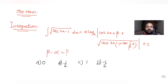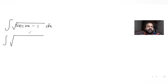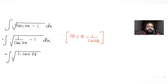Let's first understand how to solve this expression. If I try to solve this integral of root of (sec 2x minus 1) dx, I can write sec theta as 1 upon cos theta. So I get root of (1 upon cos 2x minus 1) dx, which simplifies to root of (1 minus cos 2x) upon cos 2x.